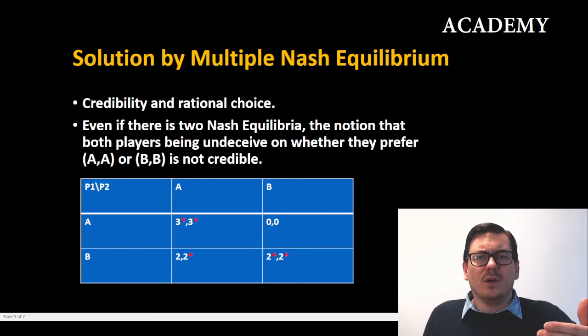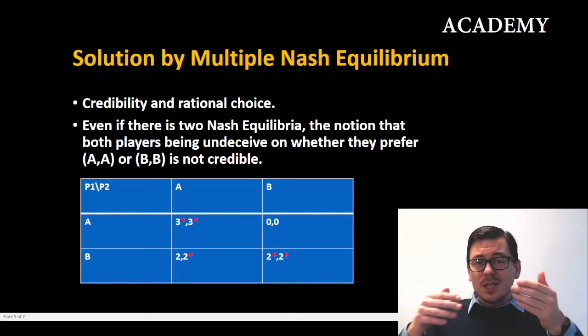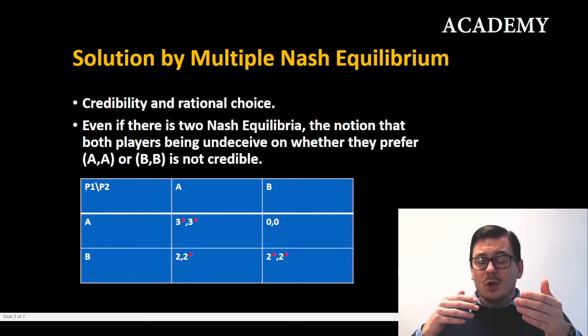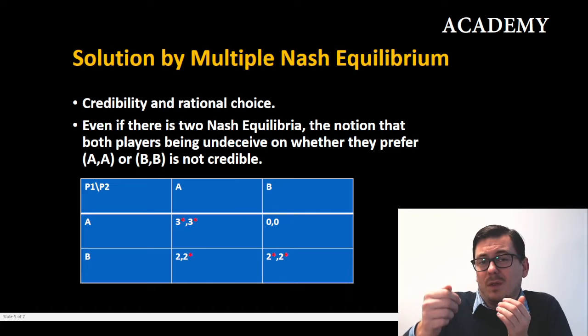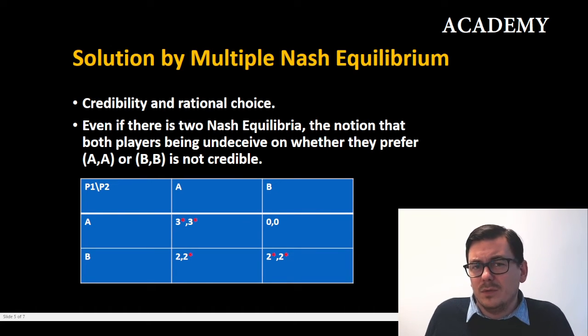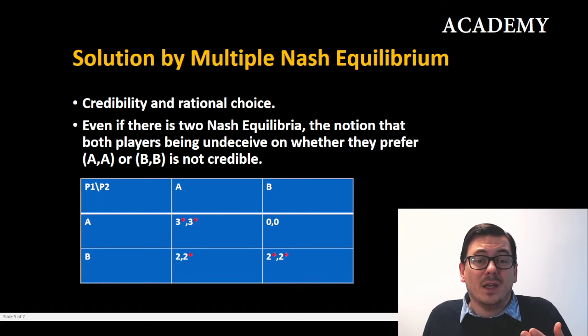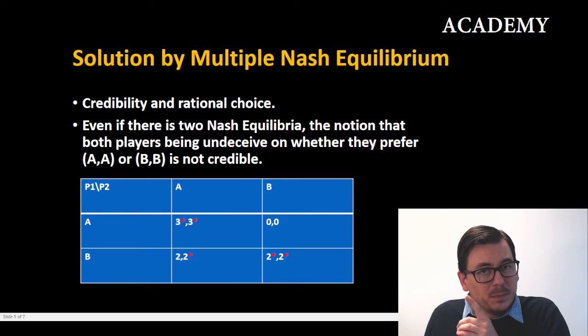Would you prefer three or two? No matter which strategy you put out, you know what the other party will play because you know their best response. So the credible solution here would be that each party actually chooses A, even though there is a Nash equilibrium (B,B).